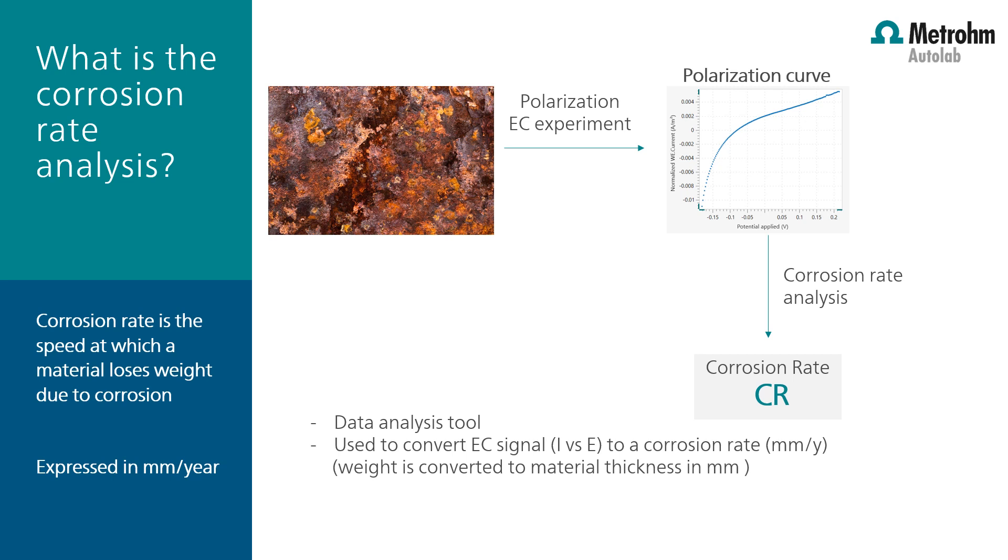First, measure the open circuit potential of the sample, and then apply a potential which is slightly lower than the OCP, and then sweep it up to some higher voltage. It is called linear polarization. Force the cathodic reaction first, and then turn to anodic reaction. You get the current versus potential curve, which is called the polarization curve.